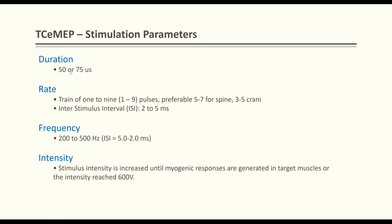Stimulation parameters: pulse duration is 50–75 microseconds; number of pulses is 1–9, with 5–7 preferred, or 3–5 for craniotomy. The Digitimer has a built-in safety mechanism — if set to 700 volts with 9 pulses, each subsequent pulse decreases (700, 680, 650...) because the machine limits output to a maximum of 560 volts across 9 pulses. If you want higher threshold stimulation, reduce the number of pulses. The inter-stimulus interval (ISI) range is 2–5 milliseconds.